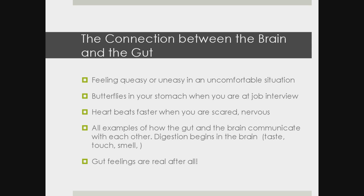Now I'm going to talk about the connection between the brain and the gut. We've all felt things in the pit of our stomach — feeling queasy, butterflies before a job interview, or a faster heartbeat when scared or nervous. These are all examples of how the gut and brain communicate with each other. Digestion actually begins in the brain and the mouth — taste, touch, and smell all communicate and travel down to our gut. Those gut feelings we have are real, and we shouldn't ignore them.